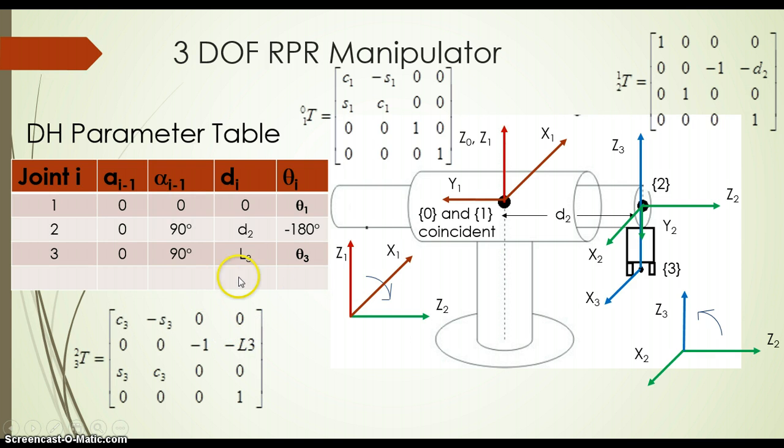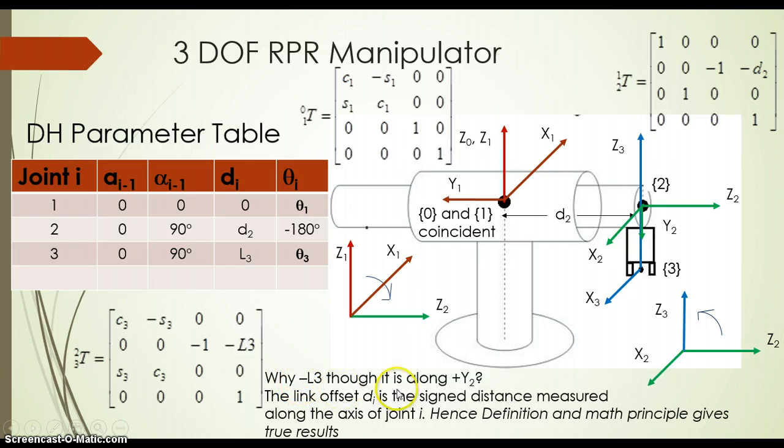For joint 3, this will be the matrix. Now here, joint 3 is rotating, so we can have cos and sine components in the orientation part, and the position showing 0, minus L3, 0. Now L3 seems to be towards positive y2, but we have a negative sign. So minus L3, though it is along plus y2. Now, if we recall the definition of link offset d_i, it is the signed distance measured along the axis of joint i. Hence, z3 pointing positive upward, so by definition also it should be minus L3.